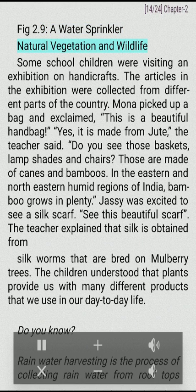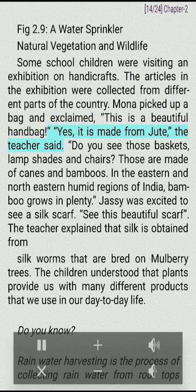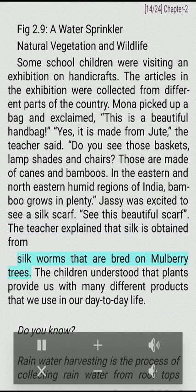Natural Vegetation and Wildlife: Some school children were visiting an exhibition on handicrafts. The articles in the exhibition were collected from different parts of the country. Mona picked up a bag and exclaimed, 'This is a beautiful handbag.' 'Yes, it is made from jute,' the teacher said. 'Do you see those baskets, lampshades and chairs? Those are made of canes and bamboos. In the eastern and northeastern humid regions of India, bamboo grows in plenty.' Jassy was excited to see a silk scarf. The teacher explained that silk is obtained from silkworms that are bred on mulberry trees. The children understood that plants provide us with many different products that we use in our day-to-day life.